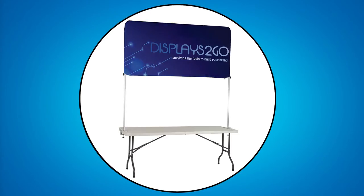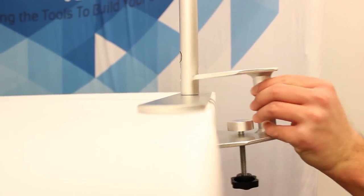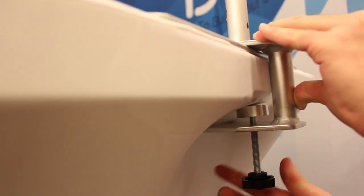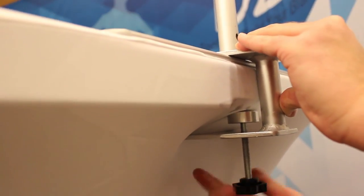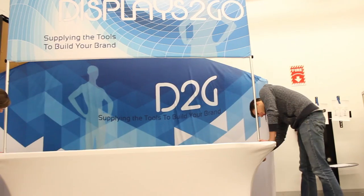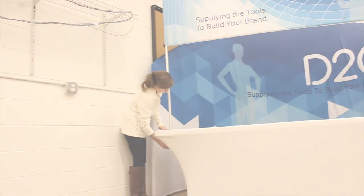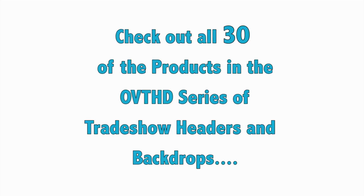If you want to mount the backdrop to a table, place the banner on top of the table with the stabilizer feet in the center of the table's short sides. Then, put the aluminum seat clamp over the feet of the stand with the screw knob located on the underside of the table. Then, tighten the knob until the banner is securely mounted.